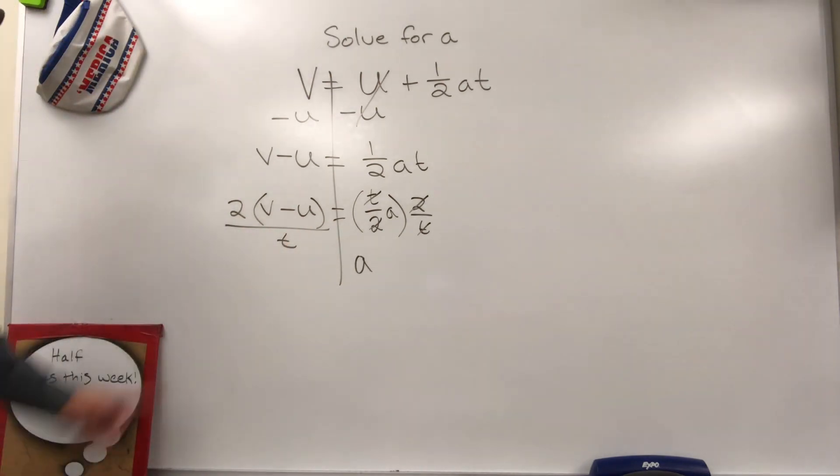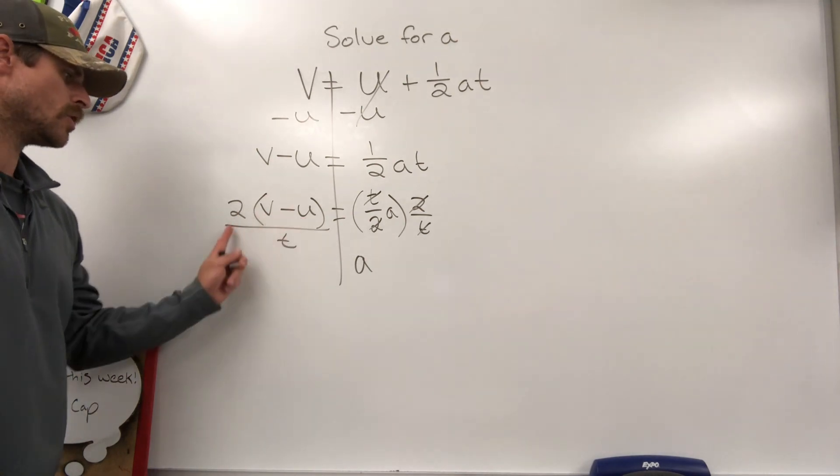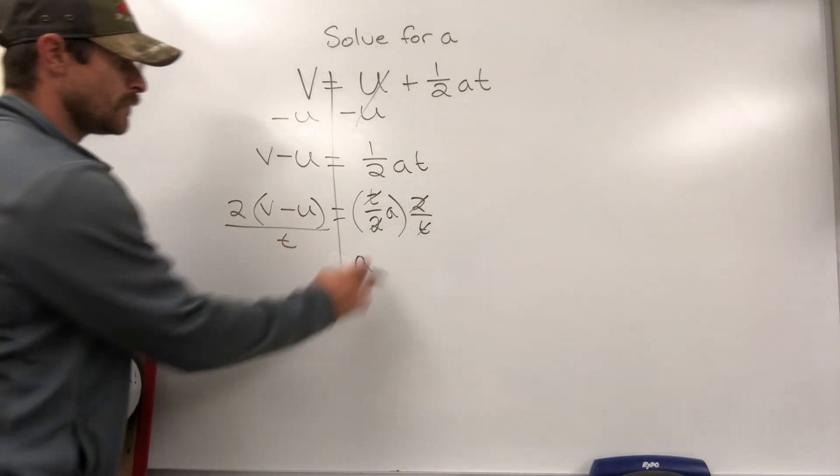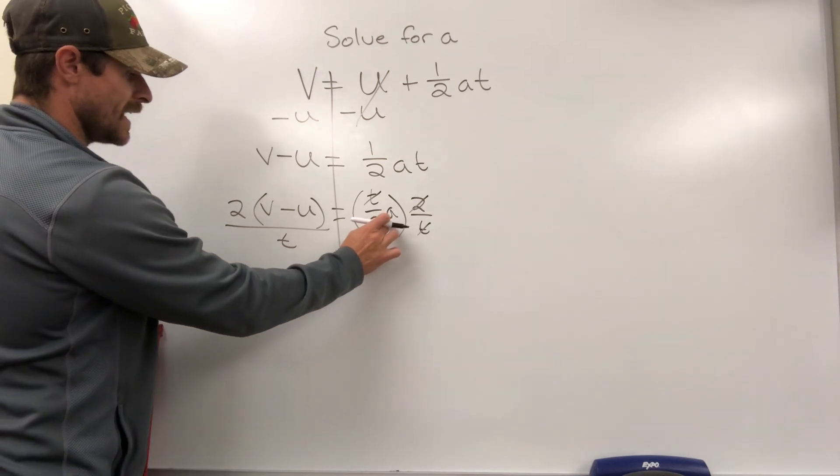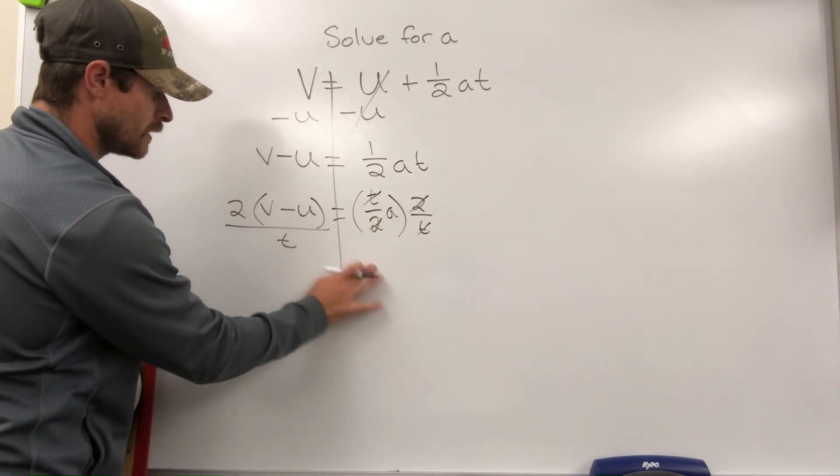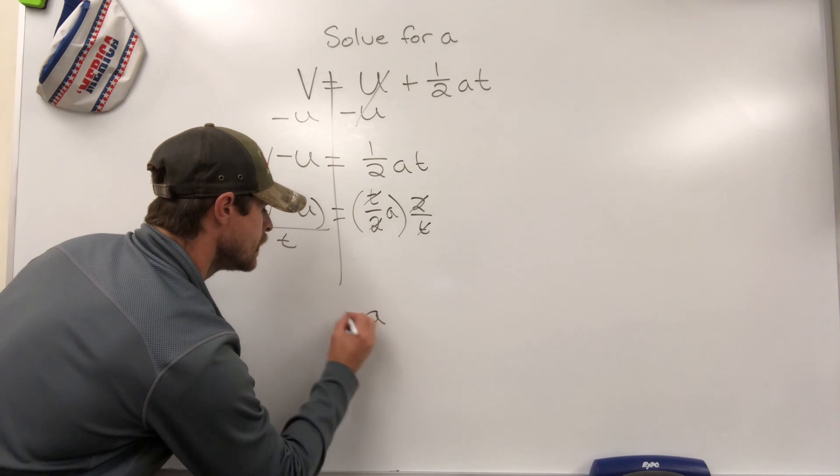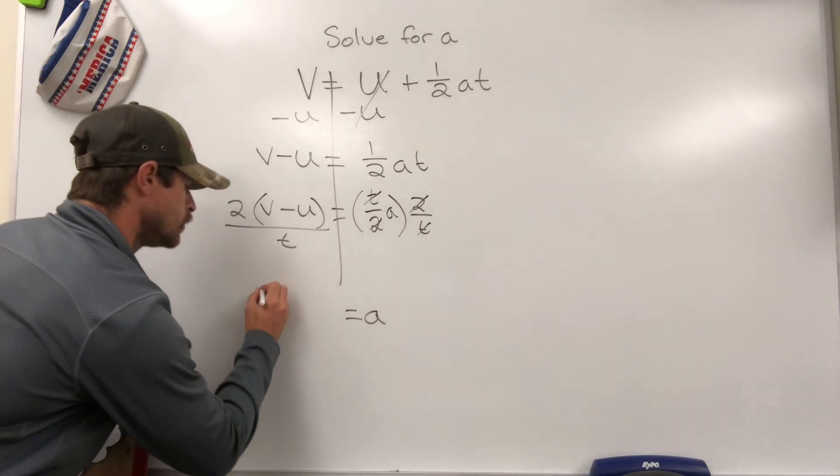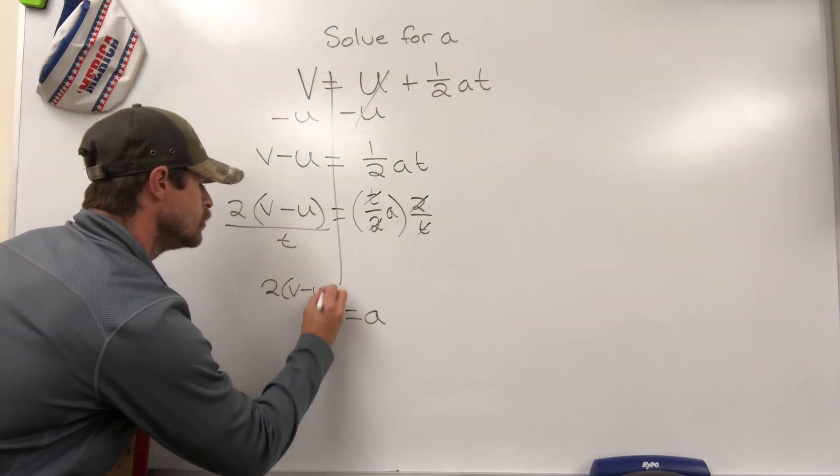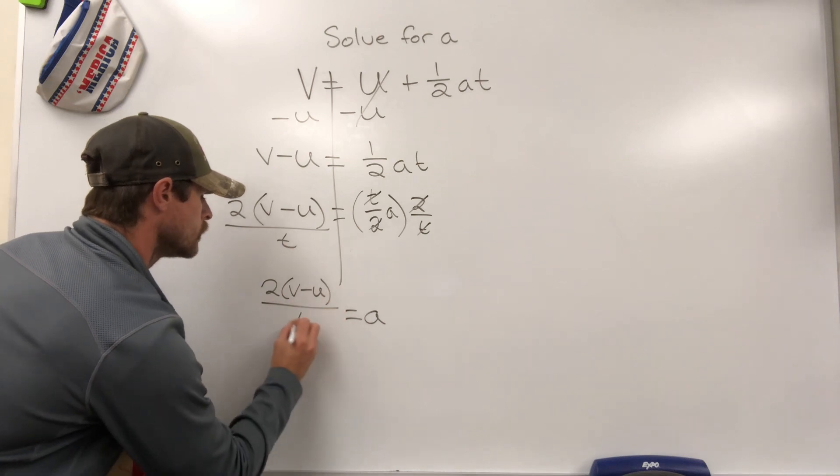Now we have 2 times V minus U over T. A is now isolated. Our final answer: A equals 2 times V minus U over T.